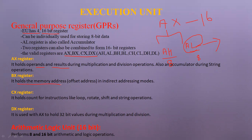The BX register is used for holding memory offset addresses, which can be converted to physical addresses. The CX register holds data and is used as a counting register. The DX register holds data and is especially used during multiplication and division — for example, when multiplying two 16-bit numbers gives a 32-bit result, the extra bits beyond 16 are saved in the DX register.